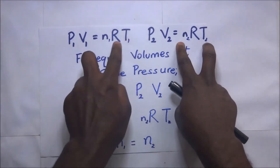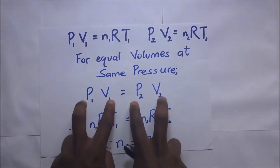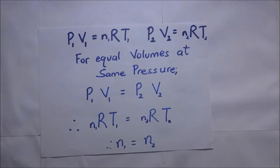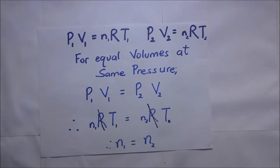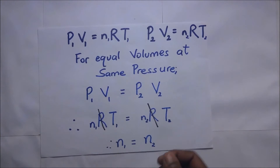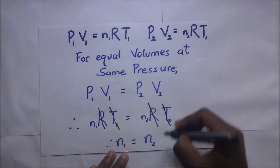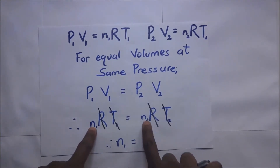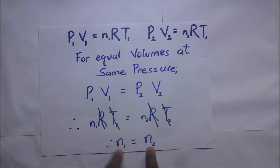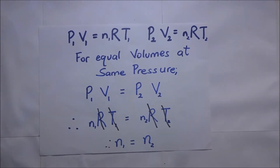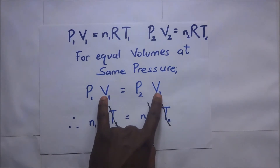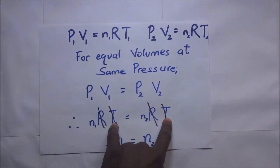Since P1V1 equals P2V2, it follows that n1RT1 is equal to n2RT2. The R's are the same and will cancel out. The temperatures are the same since we subjected both volumes to the same temperature, so T1 equals T2 and they will also cancel out. What remains is n1 and n2, and therefore n1 will equal n2 — the number of moles in gas one equals the number of moles in gas two.